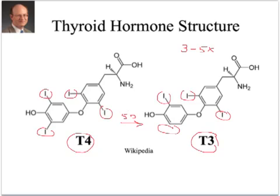Some people, because of this, have called T4 a pro-hormone, but that's not exactly true because T4 has some of its own activity. We will spend more time talking about the process of conversion of T4 to T3 through deiodinases in the next unit. But first, we'd like to talk about how the thyroid gland makes thyroid hormone from iodine and the amino acid tyrosine.